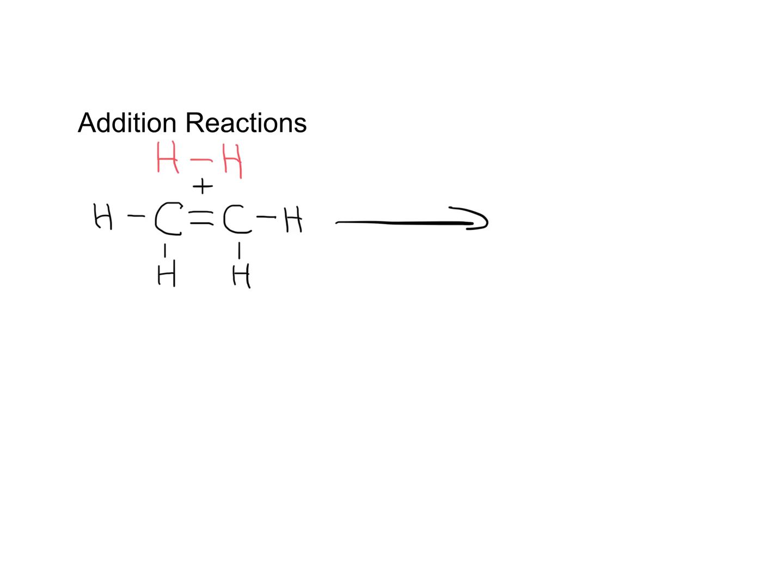That double bond means that these two carbon atoms can hold something extra. In an addition reaction, you're going to give those carbons something extra to hold on to. When we draw the product, it's quite easy to see what happens — we need to make sure that we've got those original two carbons.